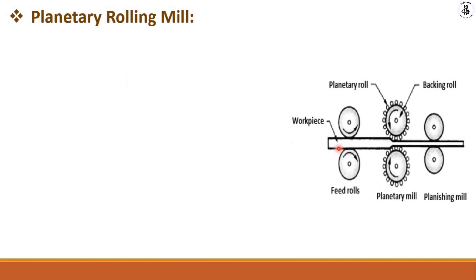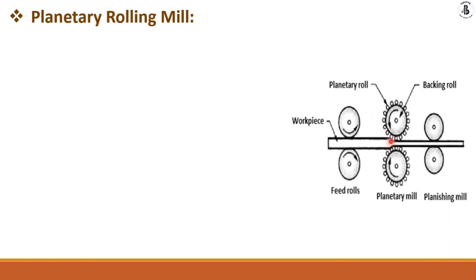Next are planetary rolling mills. Feed rolls feed the workpiece material towards the planetary rolls. Around the backup rolls, a number of small-size rolls are attached, and one by one each roll makes contact from the upper side as well as from the lower side. At any time, two or three rolls are in contact from the upper and lower sides.